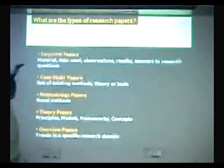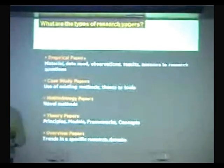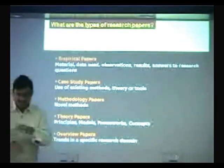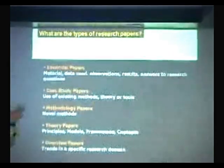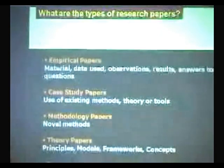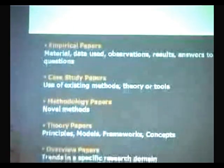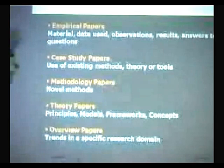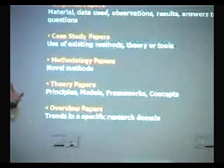When you are doing all these things, what sort of papers are likely to come out? What are the broad types of papers that you have? You have empirical papers - apparatus, materials, observations, results, answers to research questions. We did this, this was the stimulus, this is how users responded, this is how you classify the response, and these are the broad understandings.